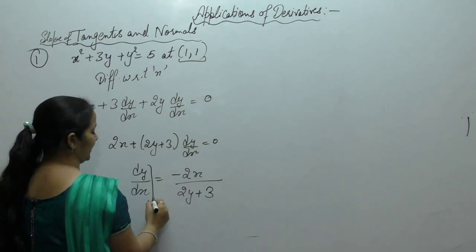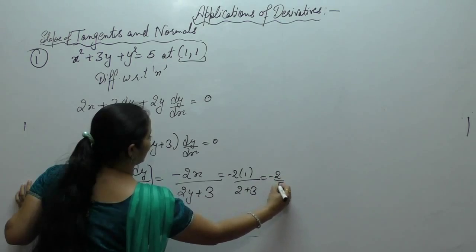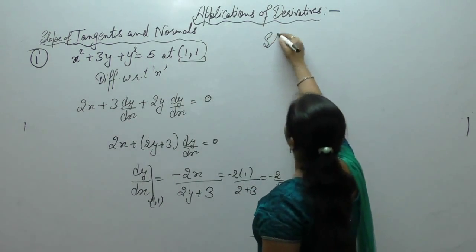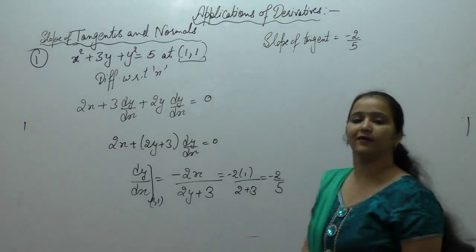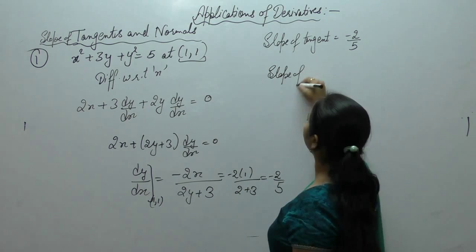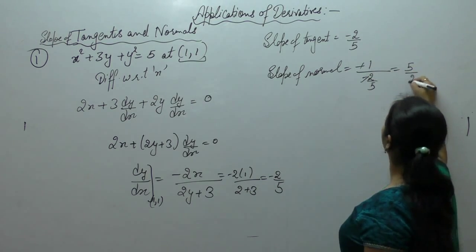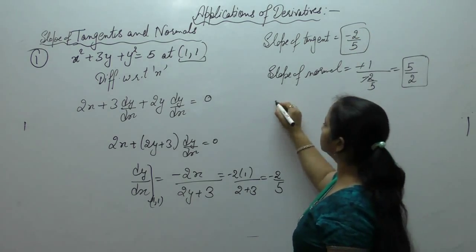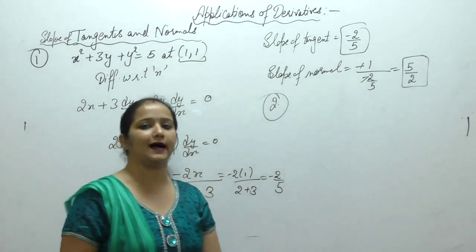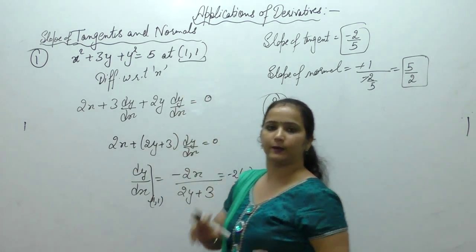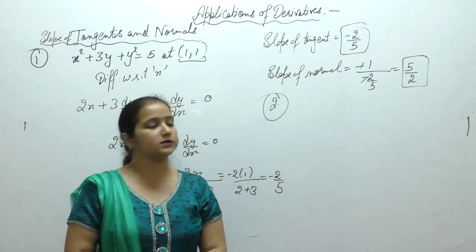Now we want to find the slope at point (1, 1). Put x = 1 and y = 1. We get slope of tangent dy/dx = -2/5. Slope of tangent at point (1, 1) is -2/5. Slope of normal is -1 upon slope of tangent, so we get slope of normal as 5/2.